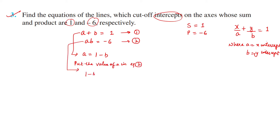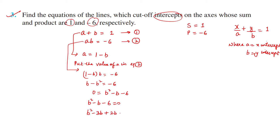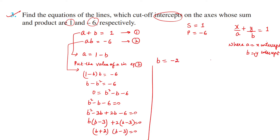From the first equation, a = 1 - b. Substituting into the second equation: (1-b)·b = -6, giving b - b² = -6, so b² - b - 6 = 0. Splitting the middle term: (b-3)(b+2) = 0, giving b = 3 or b = -2.